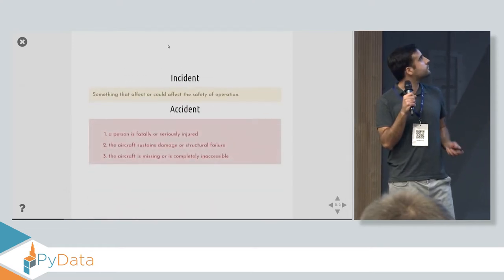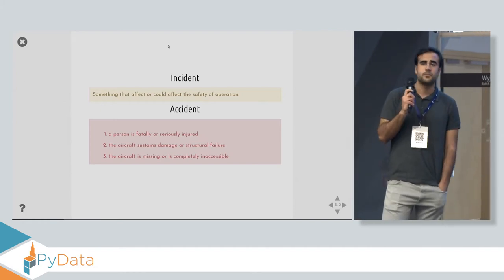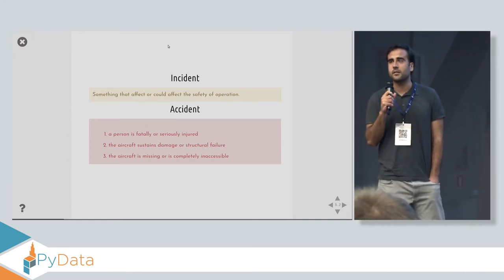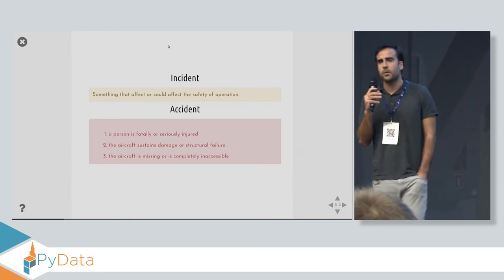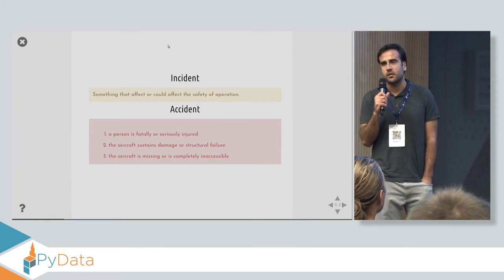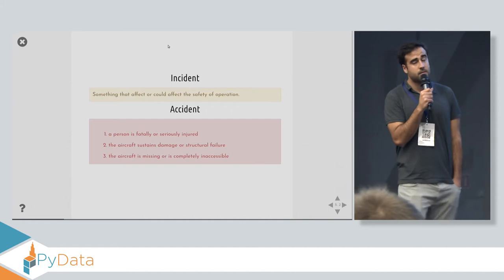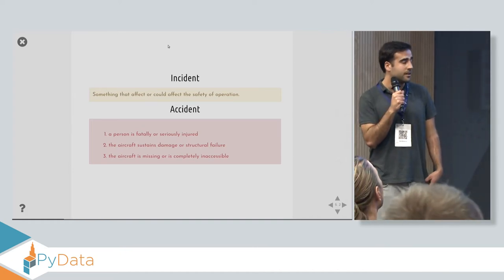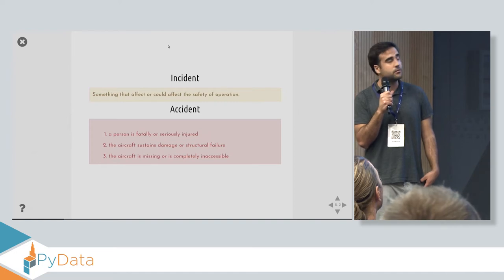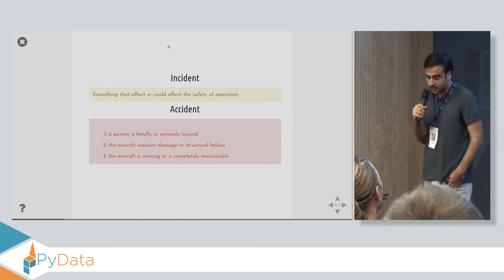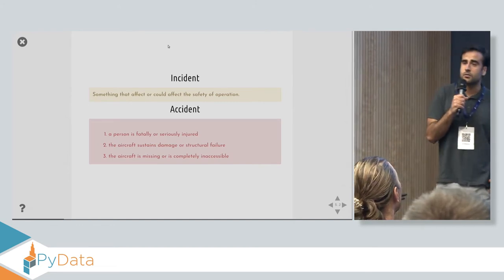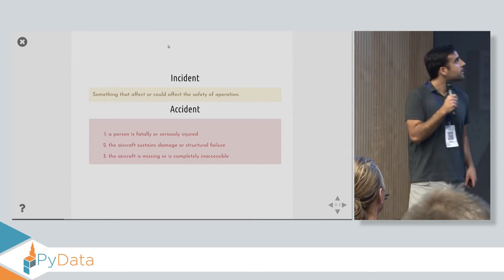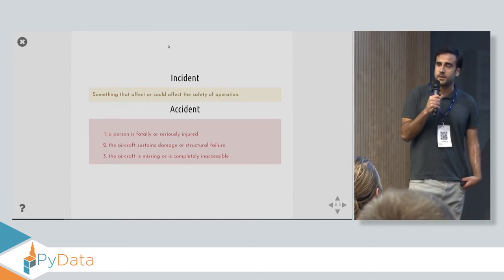Now, let's start with the data. First of all, we wanted to make an analysis of the safety of a flight that any of us in this room could take. But there are many kinds of aircraft, helicopters, small aircraft. So, we wanted to focus on commercial aircraft, the one that I think most of us have ever taken. Also, this database makes a difference between the incident and the accident. Let's say that the incident is something, an event that could lead to an accident, but it did not, luckily. And an accident is an event that caused at least an injury or a serious damage to the aircraft, or even the aircraft is missing. So, let's start with the filtering in order to get the proper data.